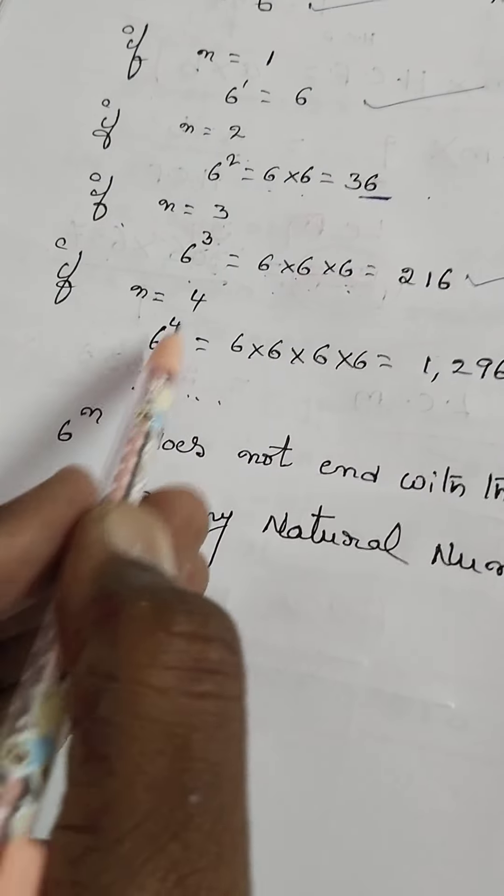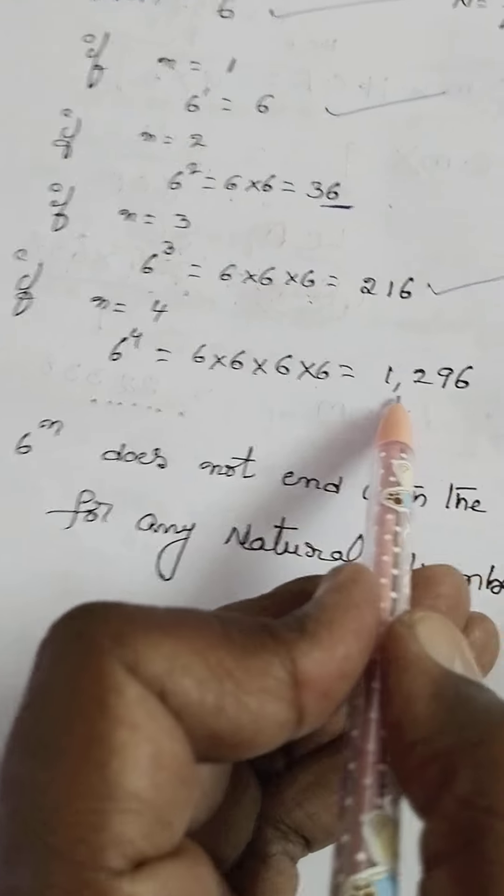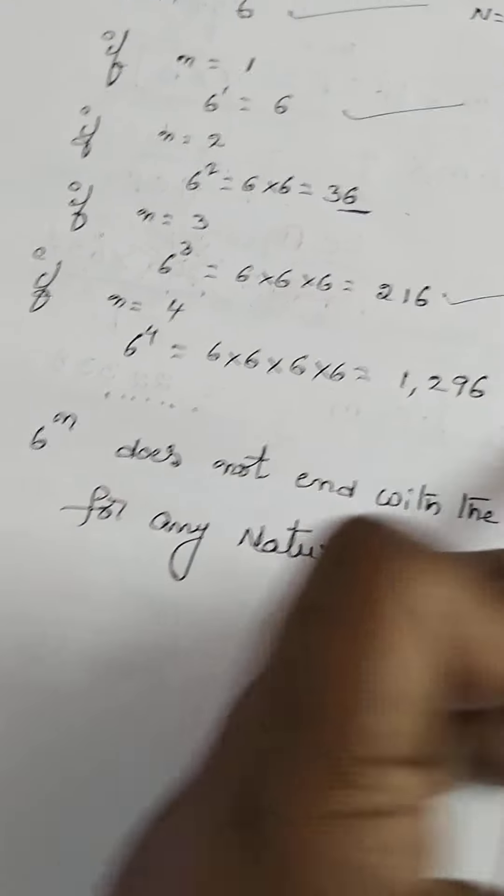if n equals 4, 6 power 4, 6 into 6 into 6 into 6 equals 1,296.